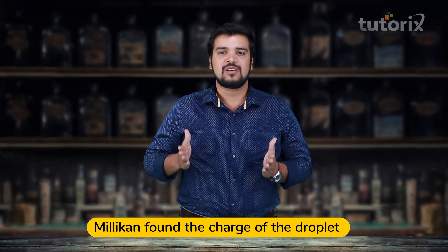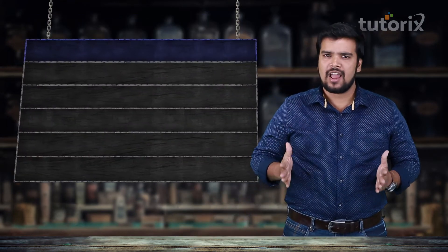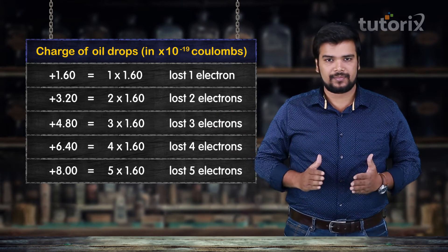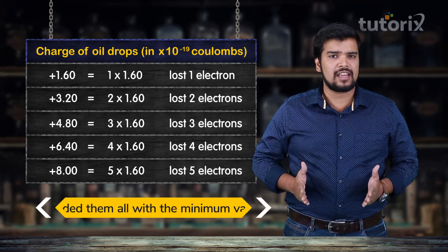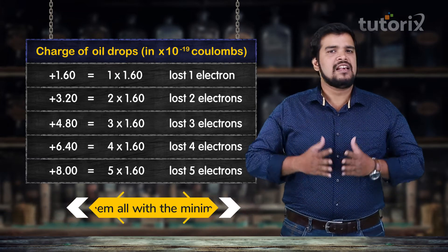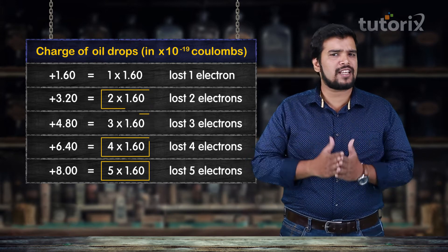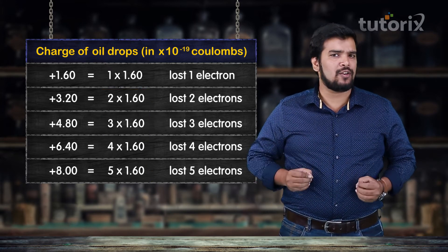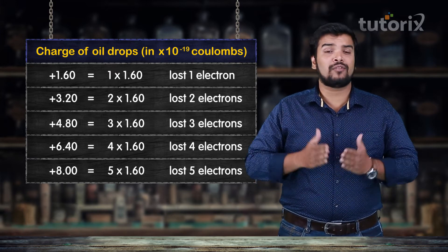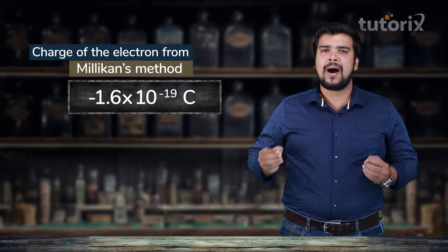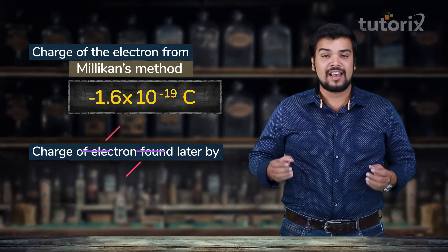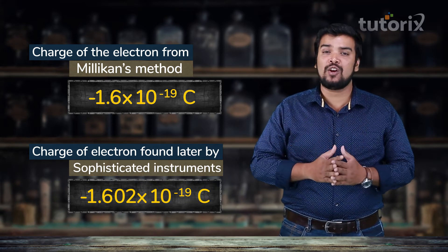Using this equation, Millikan found out the charge of the droplet. He did this for several droplets, found their charges, and tabulated them. He noticed that the charge of each droplet was always a multiple of a minimum fixed value. To see this clearly, he divided all the charges by this value. Since the total charge on the droplet was always a multiple of a fixed value, Millikan concluded that this fixed value must be equal to the magnitude of the charge of the electron itself. Since the electron is a negatively charged particle, the charge of the electron is −1.6 × 10⁻¹⁹ coulombs.